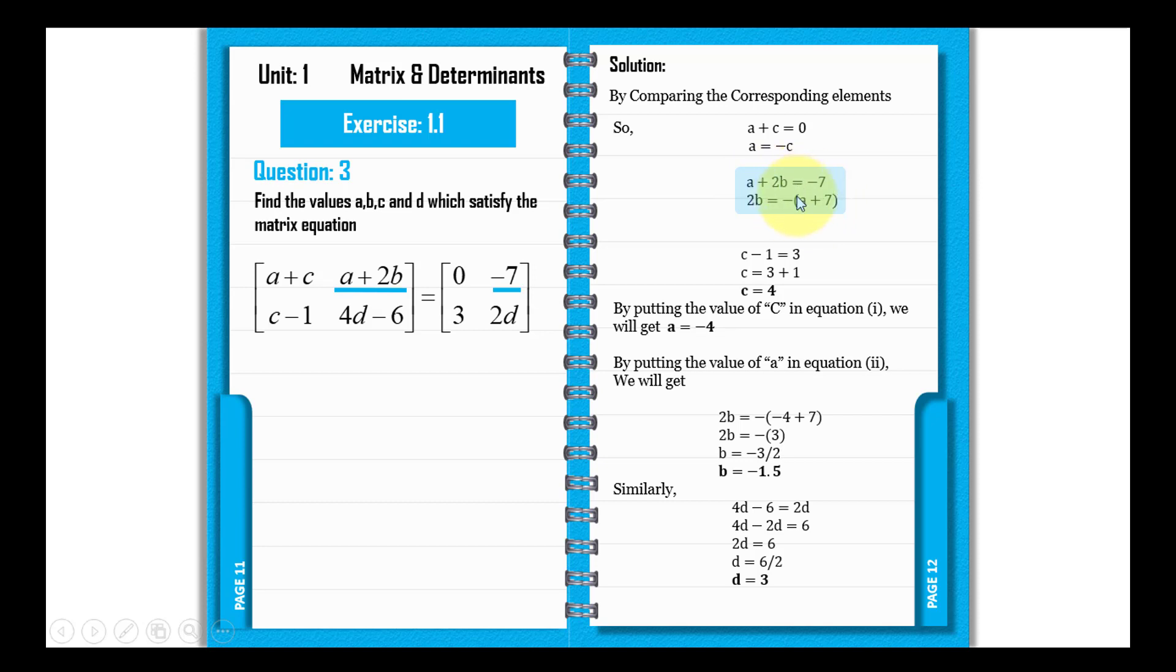We have 2b equals minus bracket a plus 7. From c minus 1 equals 3, we get c equals 4.